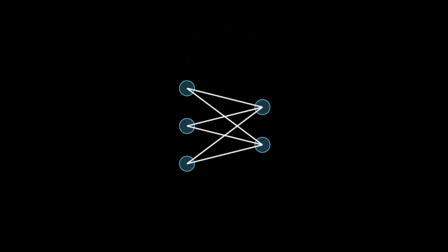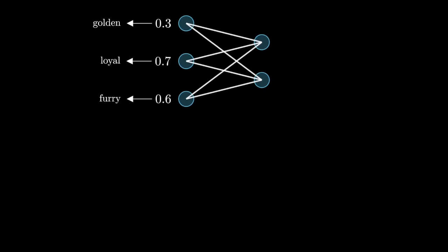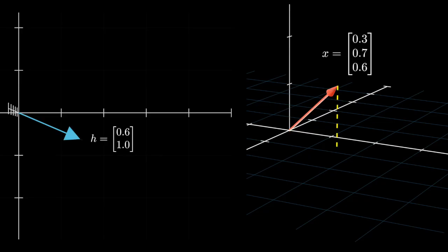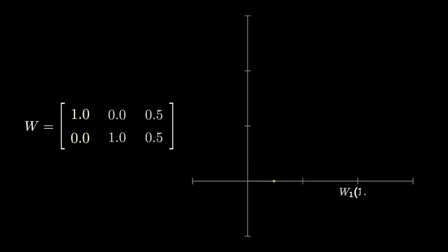Let's use our toy input vector that encodes three features, and W is a 2x3 matrix that compresses the three-dimensional input vector into a 2-dimensional hidden space. Each column of W represents the direction in the 2D hidden space where an input feature is mapped from its original 3D space. So the first column, W1, is the 2D direction for the first feature, W2 for the second, and W3 for the last one.